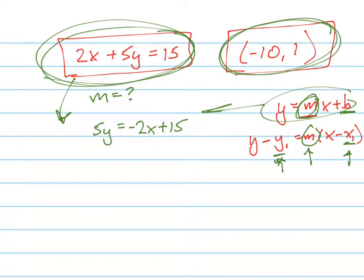So how do I get rid of 5? I don't subtract it. I divide. It's negative 2 fifths x plus 3. There's your slope.